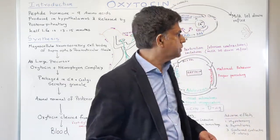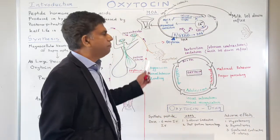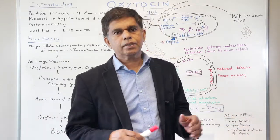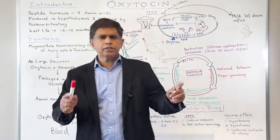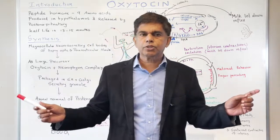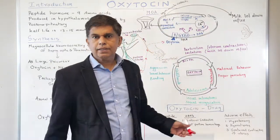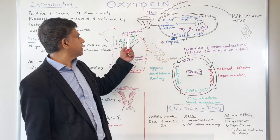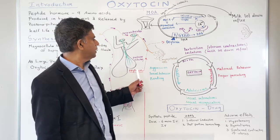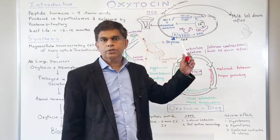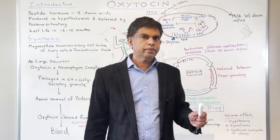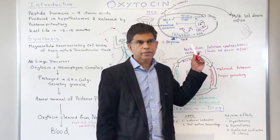Now let's look at the mechanism of action. Everybody knows the role of oxytocin in labor — it helps with contractions. The stimulus for oxytocin release during labor is cervical dilatation. That signal goes to the paraventricular and supraoptic nuclei, oxytocin is produced, and oxytocin has only one receptor — a G-protein coupled receptor.